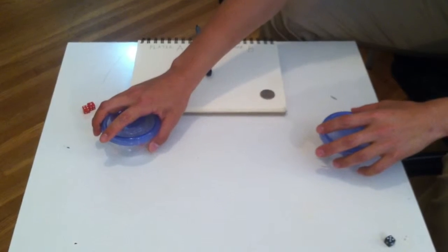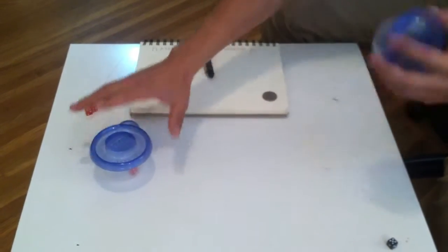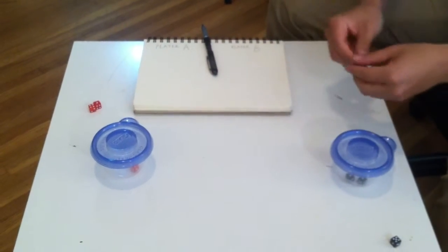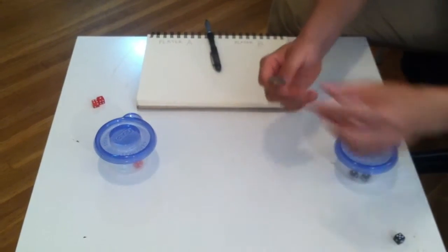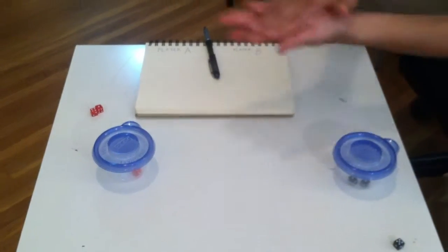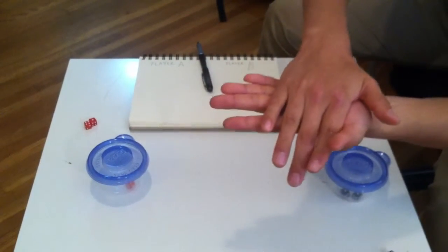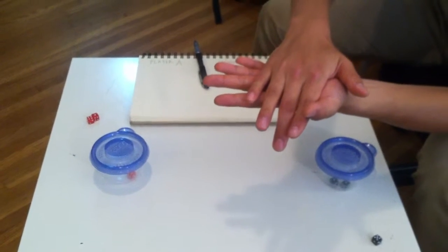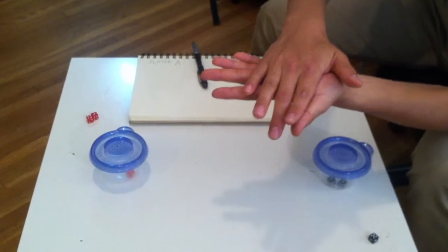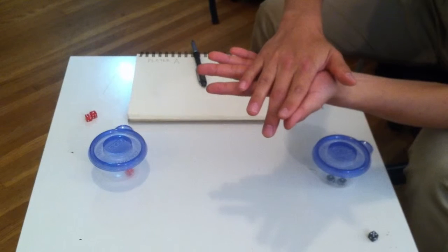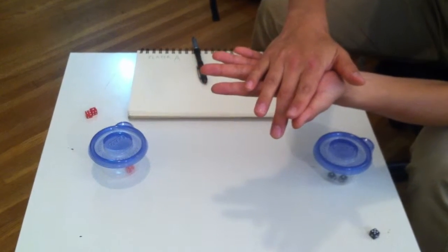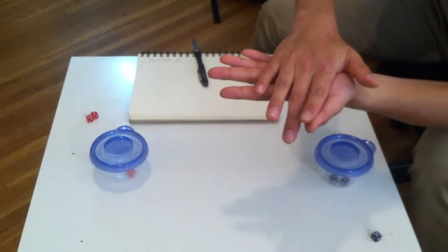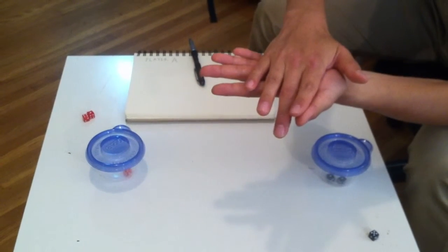Each player rolls their dice. Then they toss the coin. The head of the coin means the higher score is the winner. The tail of the coin means the lower number is the winner.